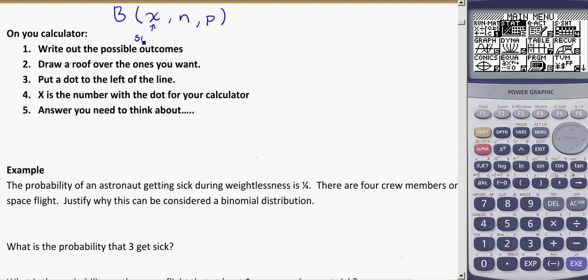All right, so this is successes, trials, and probability of success. Now, sometimes figuring out what X is is a little bit complicated because they're looking for more than one outcome. So these are the tricks for us that'll work.